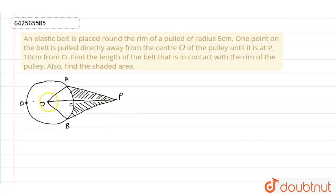This is a point 10 centimeter from O, so OP equals 10 centimeter and OA equals radius of the circle, 5 centimeter.